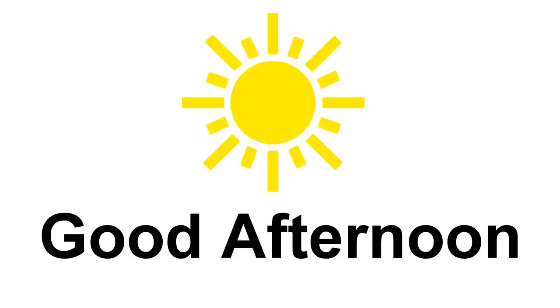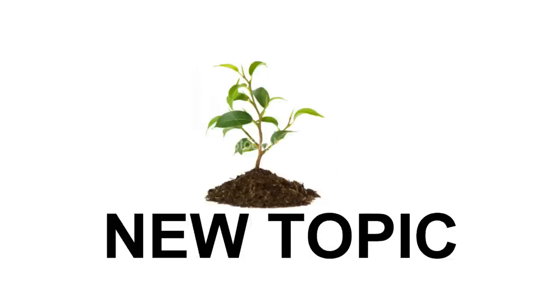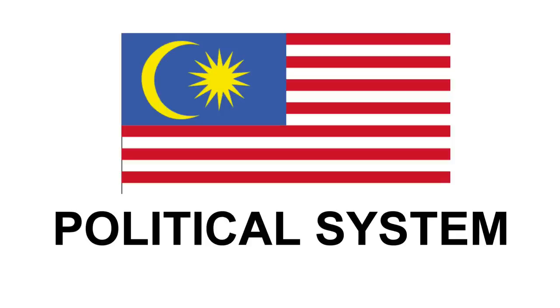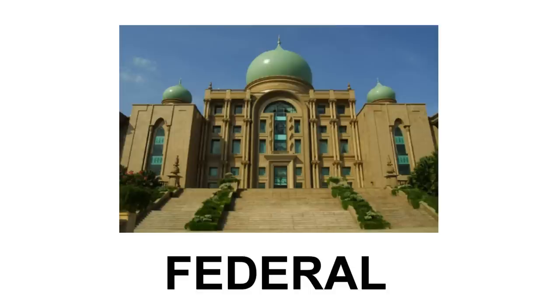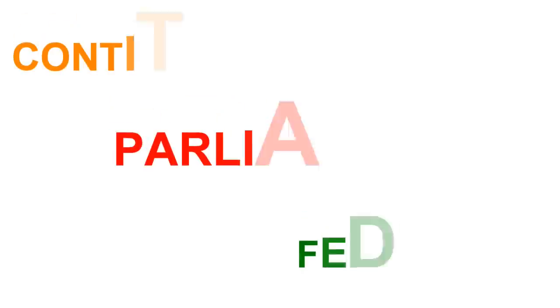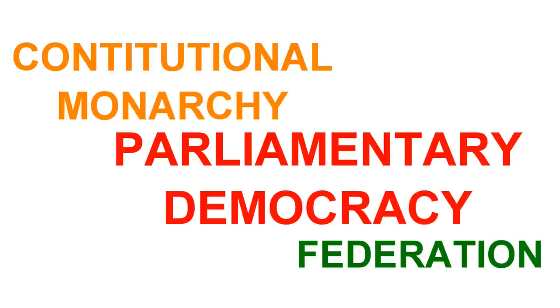Hi, good afternoon class. Today we are going to learn a new topic: political system in Malaysia. Our government adopts three different types of systems. The first one is known as constitutional monarchy, parliamentary democracy, and federation, or some might call it federalism. Let's look one by one at what is constitutional monarchy, parliamentary democracy, and federation.